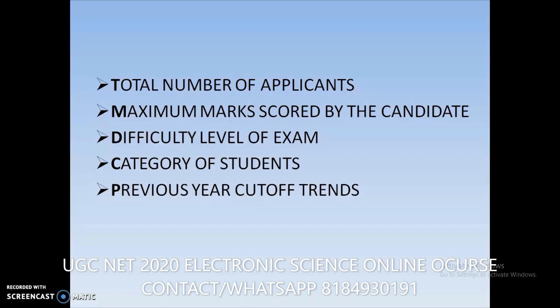The fourth factor is the category of the student. Depending on your caste category — whether it is OC, OBC, SC, ST, Economically Weaker Section, or PWD — the cutoff marks may vary.